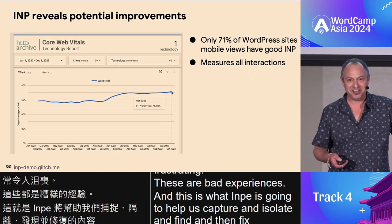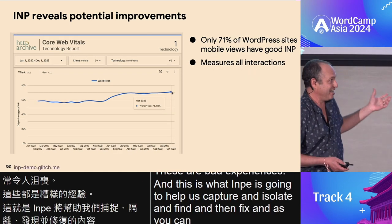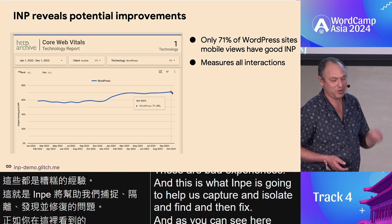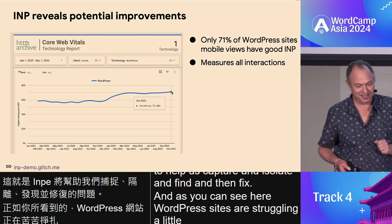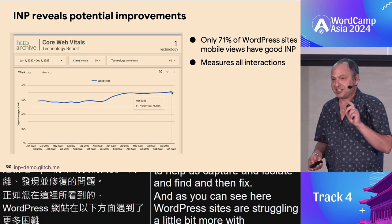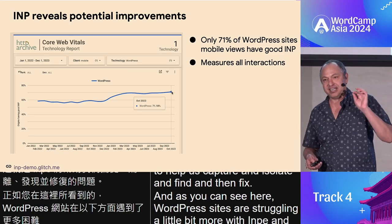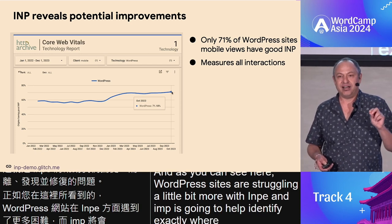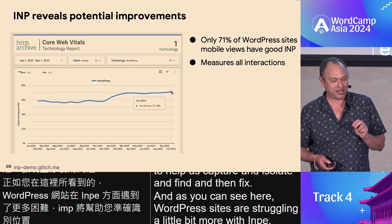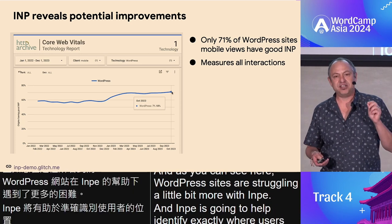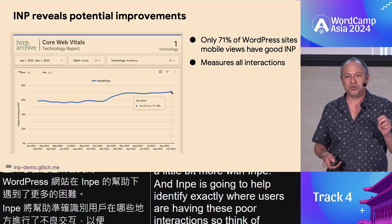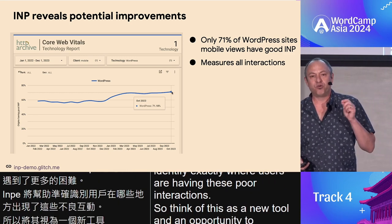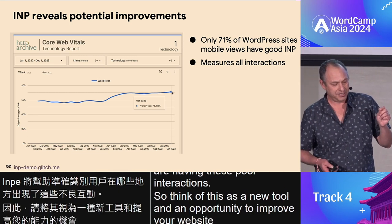As you can see here, WordPress sites are struggling a little bit more with INP. INP is going to help identify exactly where users are having these poor interactions. Think of this as a new tool and an opportunity to improve your website for your users.